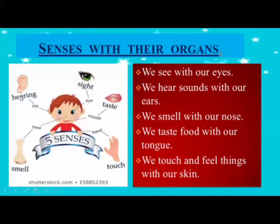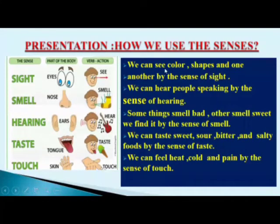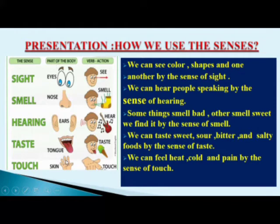The five sense organs are nose, ear, eyes, tongue, and skin. The part of the body we use to see things is our eyes. To smell things we use our nose, to hear sounds we use our ears, to taste food we use our tongue, and to touch and feel things we use our skin.